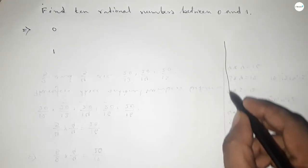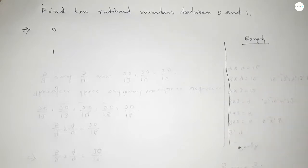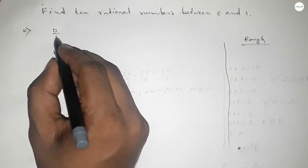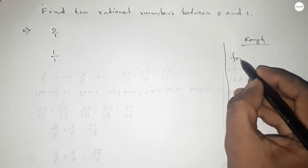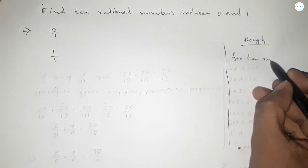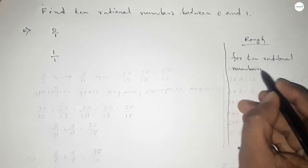Now roughly discussing some calculation here. We can write 0 as 0 over 1 and 1 as 1 over 1. Now for finding 10 rational numbers between any two numbers, we have to follow this method.